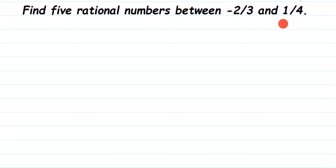The first step is to check if the denominators are the same or not. Here we have 3 and 4 as denominators, so they are not the same. We need to make them the same by taking the LCM of the denominators. The LCM of 3 and 4 is 12.